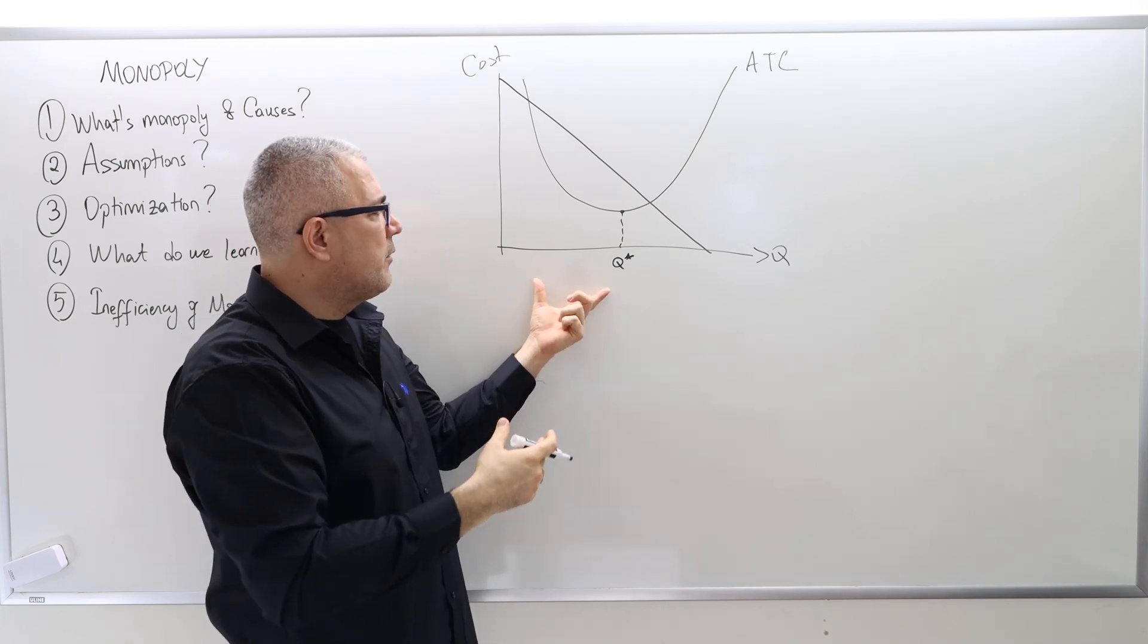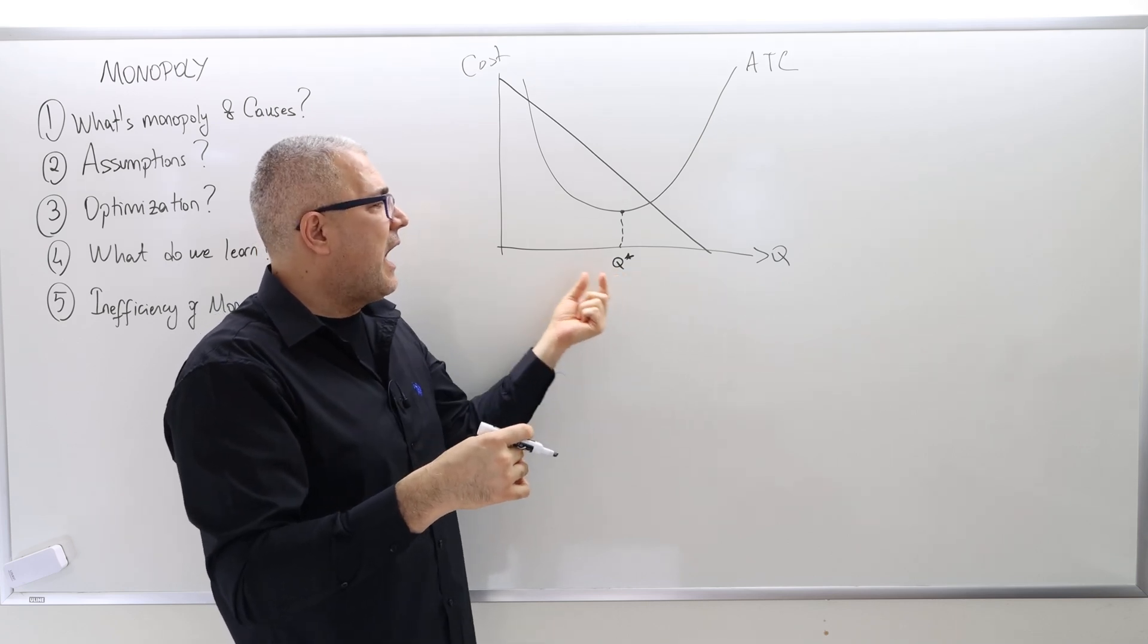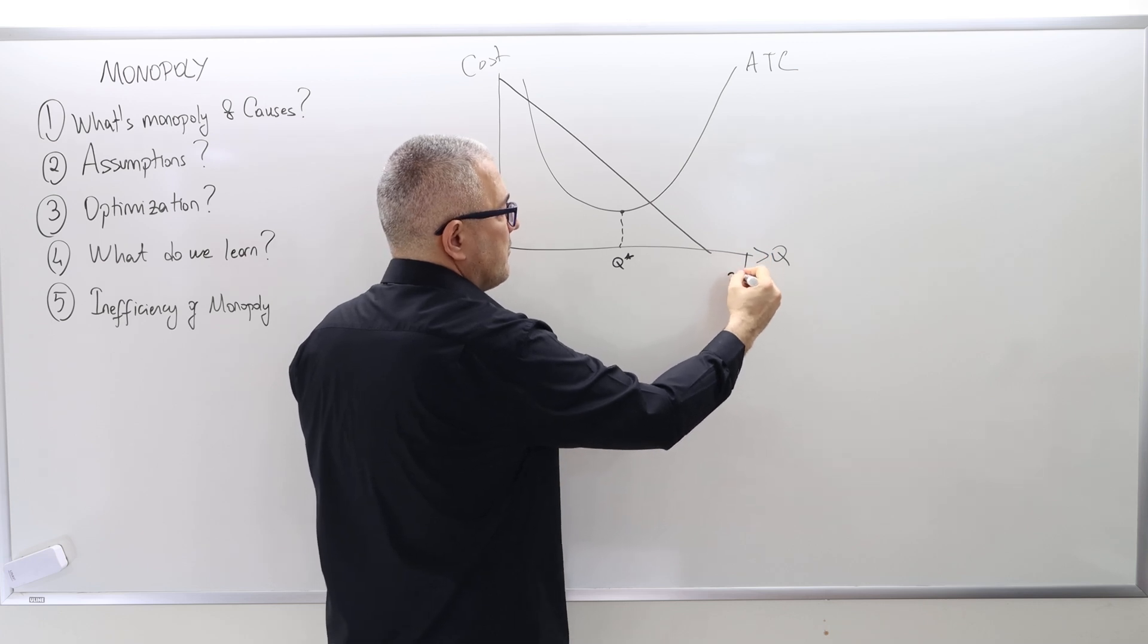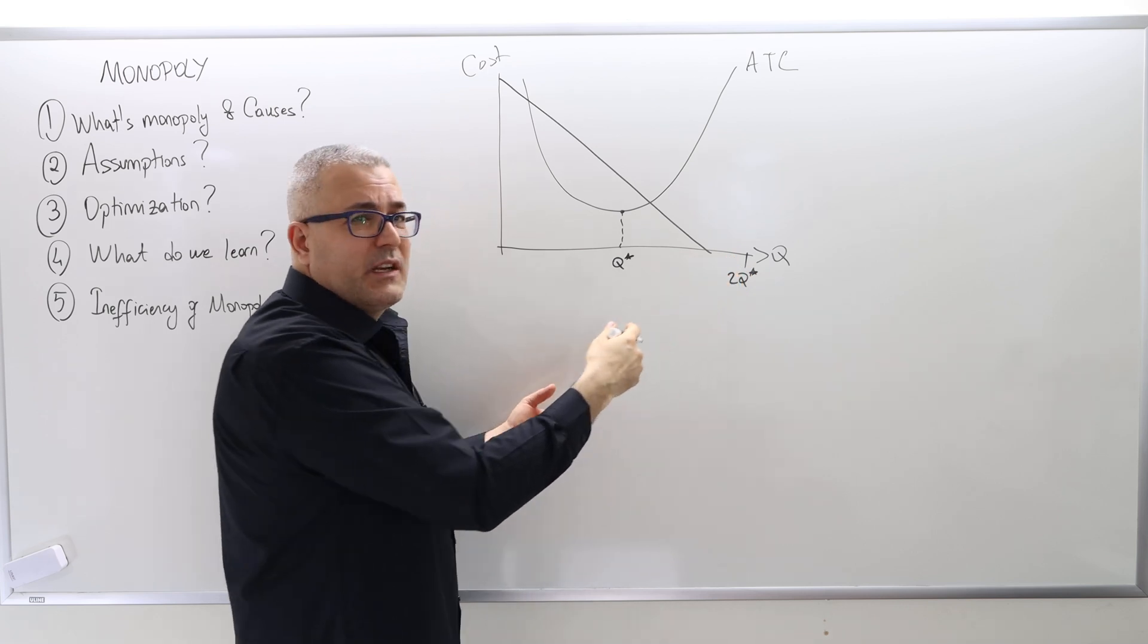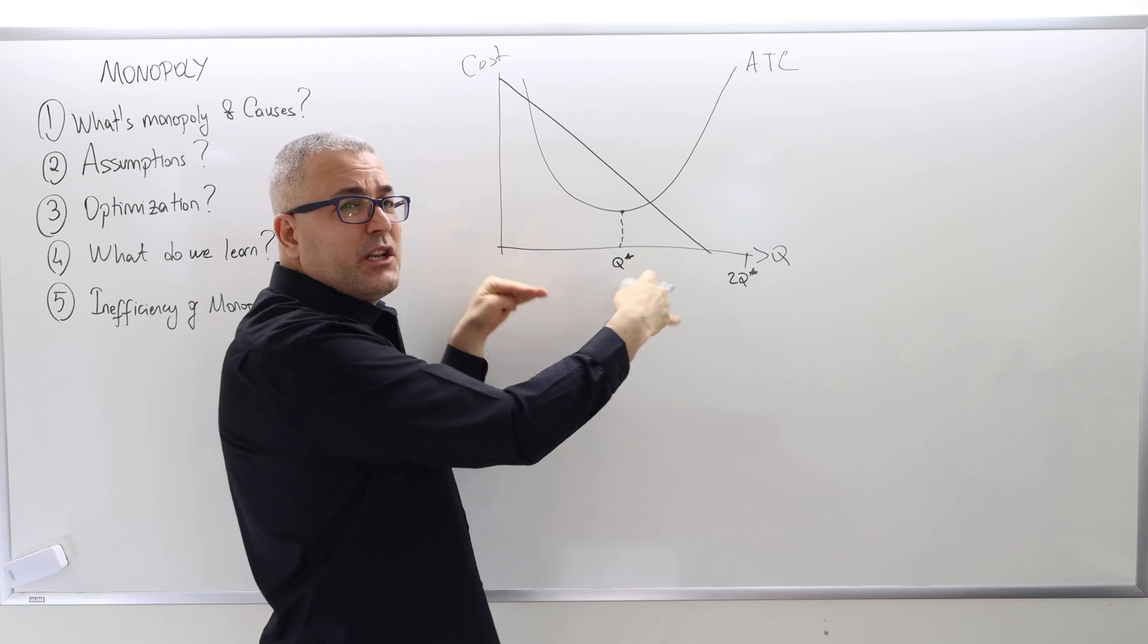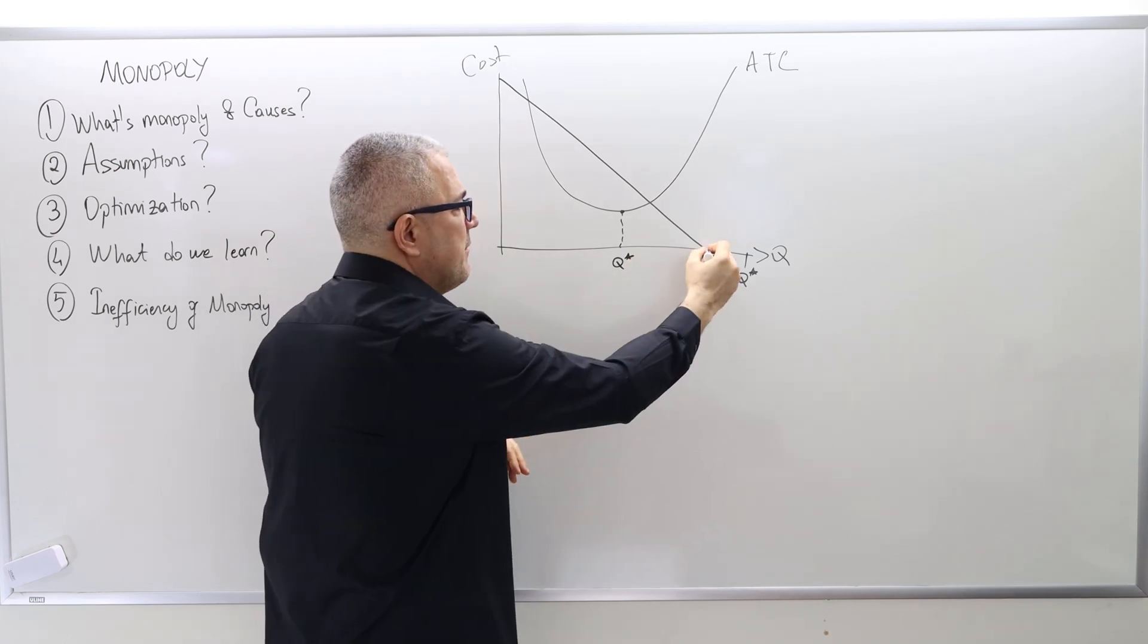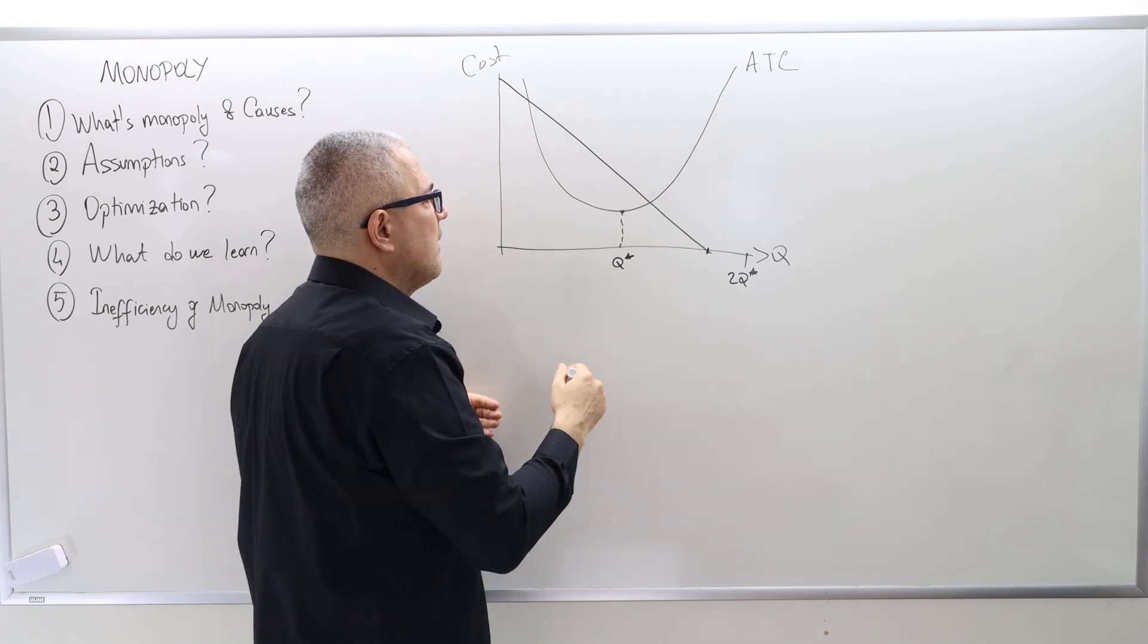So, a second firm is going to bring the total quantity Q double star. And when total quantity is two double star, I don't know, let's say it's somewhere here. Clearly, the quantity demand is going to be negative, in a sense. The price should be negative because you can't really sell that much. That's the maximum quantity you can sell in this market.